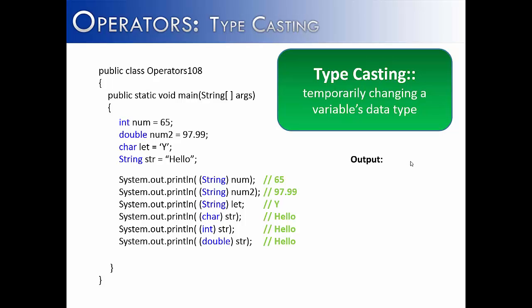Last, we're going to try to take num, num2, and let and convert them into strings using typecasting. Then we're going to take the string str and try to convert it into char, int, or double. All of these attempts would fail. A simple data type cannot be converted into a class, which is what string is, and a class like string cannot be converted into a simple data type in this way. If you wanted to convert a number into a string or another value into a string, there are methods that do this, but typecasting is not the correct way and will result in an error.